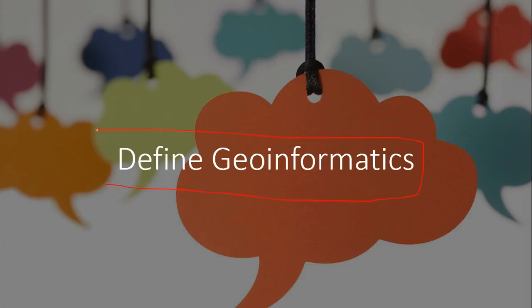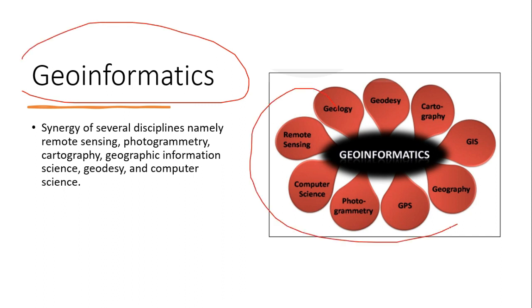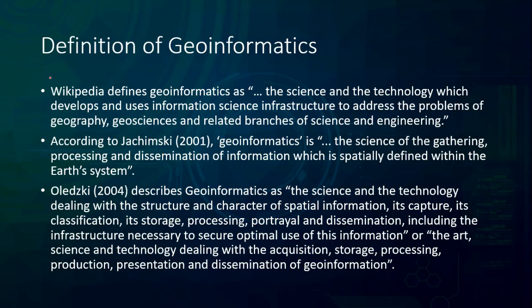Starting with the definition of geoinformatics: geoinformatics is a combination of different disciplines like geology, geodesy, cartography, GIS, geography, GPS, photogrammetry, computer science, and remote sensing. According to Wikipedia, geoinformatics is the science and technology which develops and uses information science infrastructure to address the problems of geography, geoscience, and related branches of science and engineering.